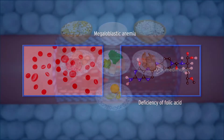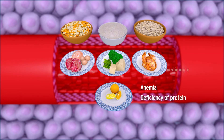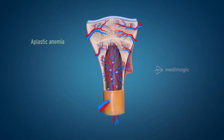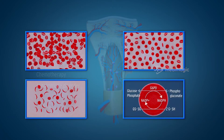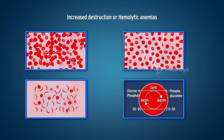Anemia due to deficiency of protein and vitamin C. Aplastic anemia is due to failure of bone marrow to produce RBCs, caused by exposure to high-dose radiation, toxic chemicals, chemotherapy, or autoimmune disorders such as lupus erythematosus.